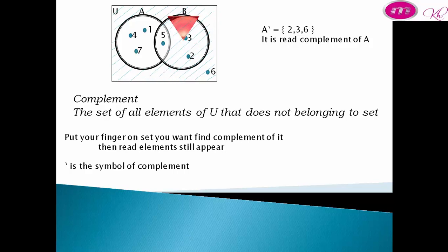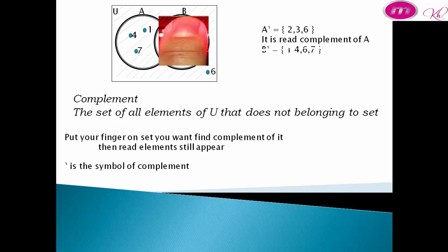To find the complement of B, put your finger on set B and read the elements that still appear: 1, 4, 7, 6. So complement of B equals {1, 4, 6, 7}.